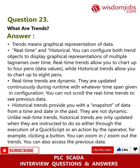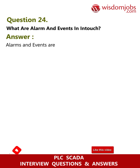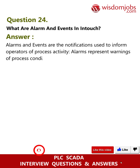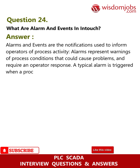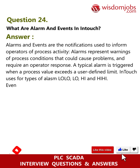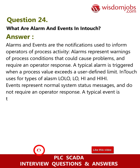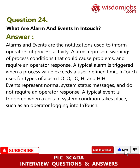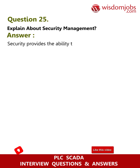Question 24: What are alarms and events in InTouch? Answer: Alarms and events are notifications used to inform operators of process activity. Alarms represent warnings of process conditions that could cause problems and require an operator response. A typical alarm is triggered when a process value exceeds a user-defined limit. InTouch uses four types of alarms: Low-Low, Low, High, and High-High. Events represent normal system status messages and do not require an operator response. A typical event is triggered when a certain system condition takes place, such as an operator logging into InTouch.